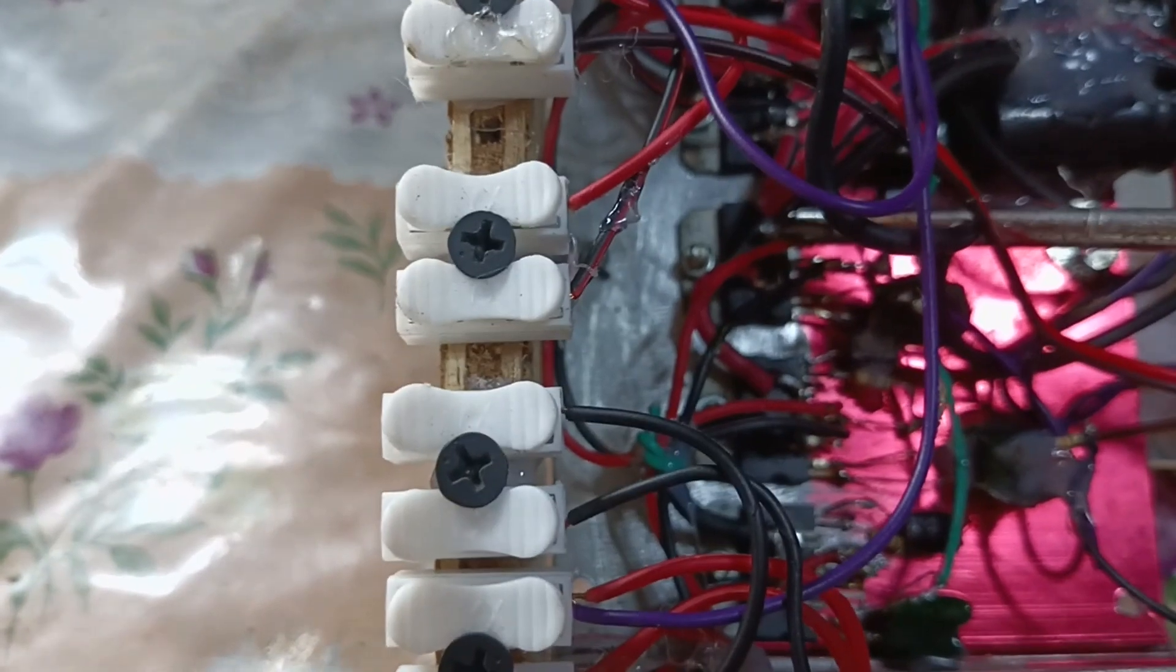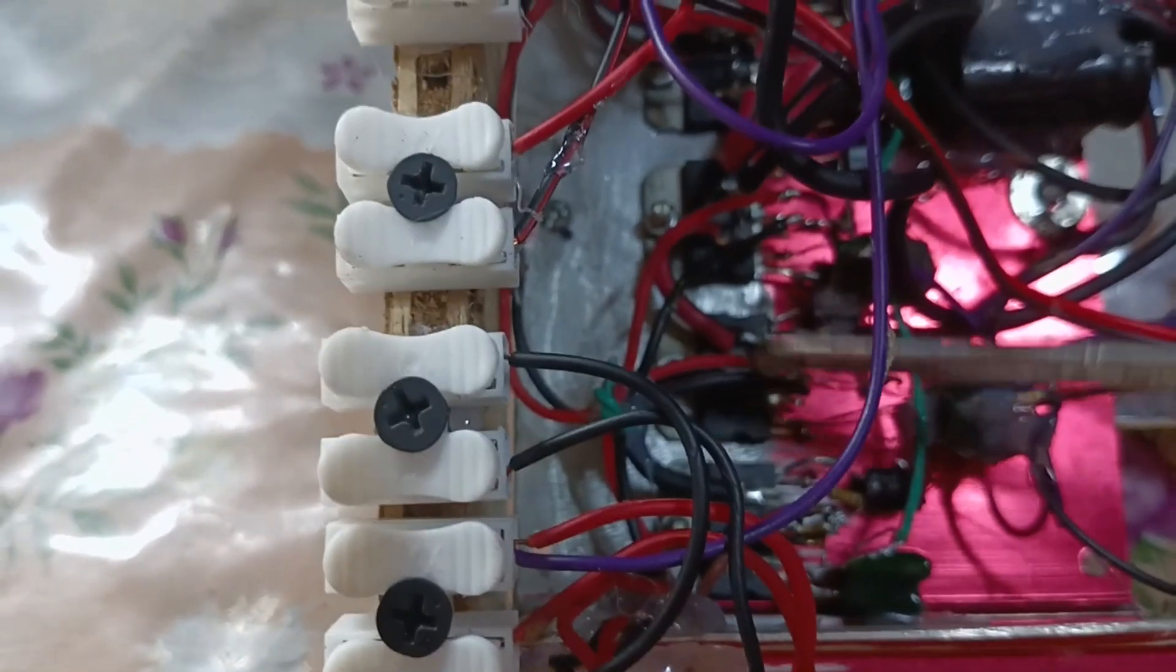Tapos, yung bawat isa nito, isa sa midrange, isa sa tweeter. Tapos, yung input nang galing sa dalawang DBC, sa apat na IC nyan, ay nanggagaling dito sa ating bass booster na preamp.